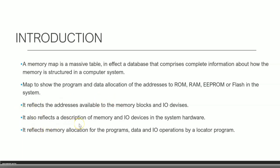The memory map also reflects a description of memory and I/O devices in the system hardware. It reflects memory allocation of programs, data, and I/O operations by the locator program. The locator is the software that allocates data to various addresses. By consulting the memory map, the locator can find free memory available and then allocate new data to those locations.